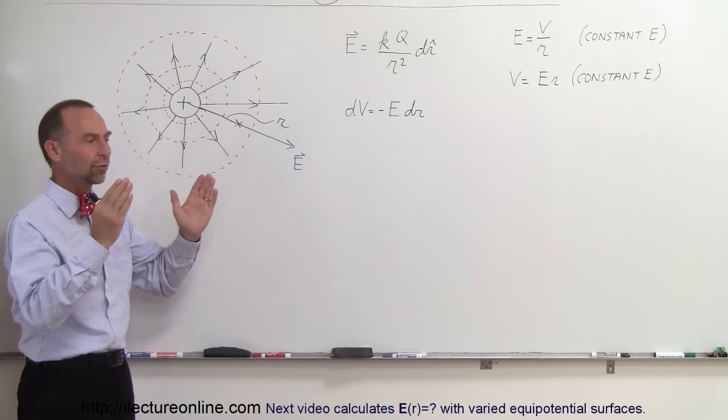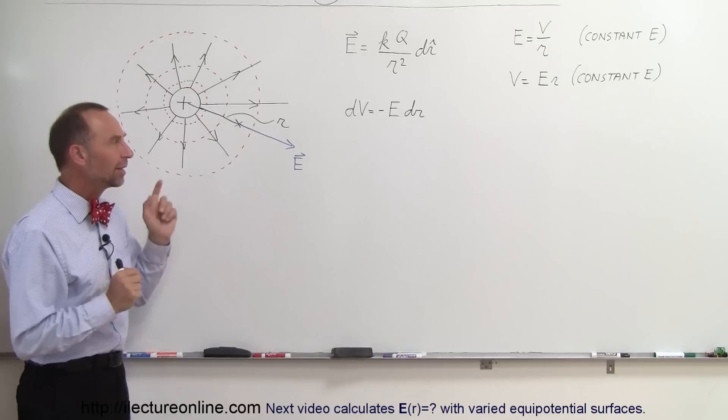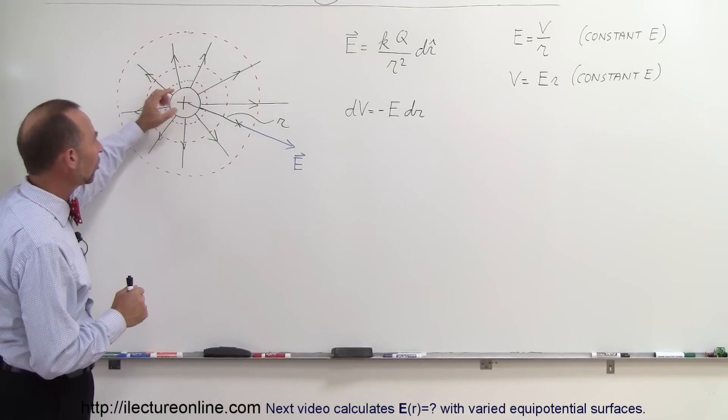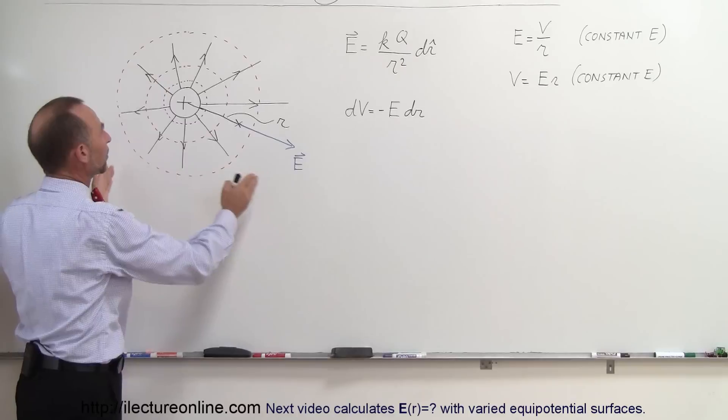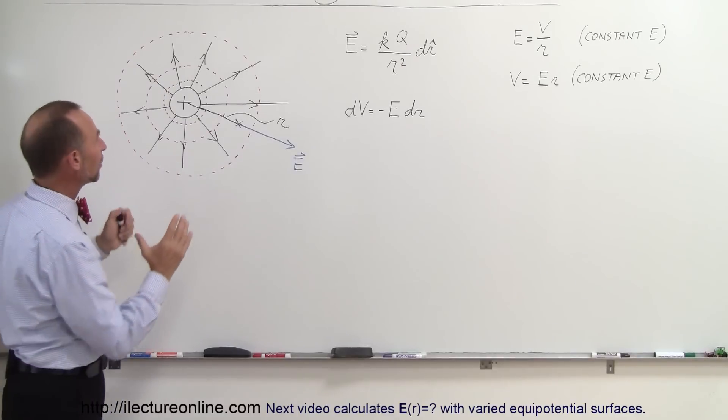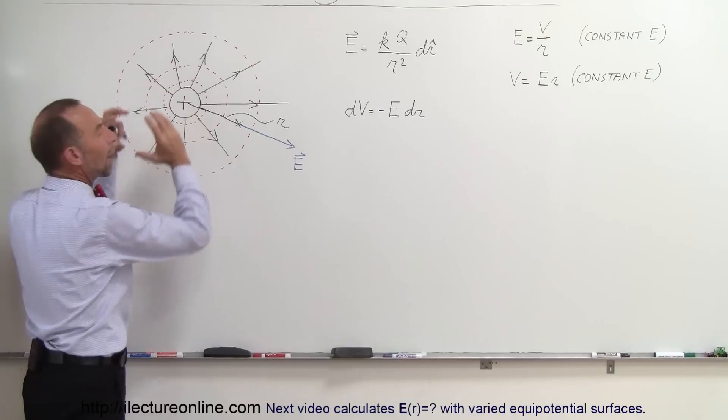Remember the previous example we had the electric field between capacitor plates so the electric field was the same everywhere. But in this case we have a point charge called Q and we have an electric field emanating away from that point charge.